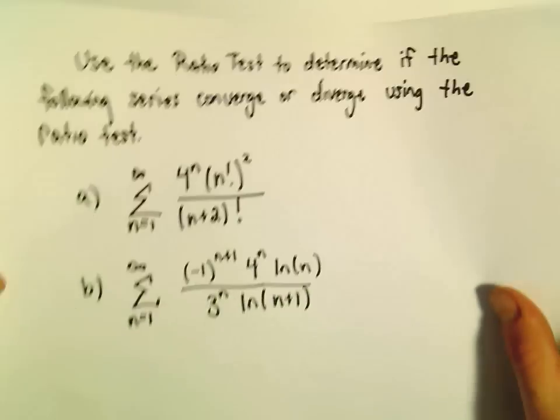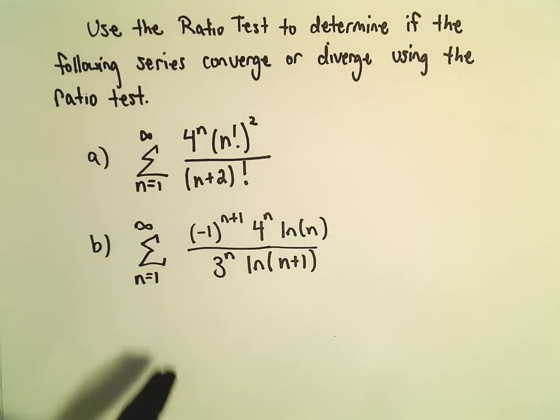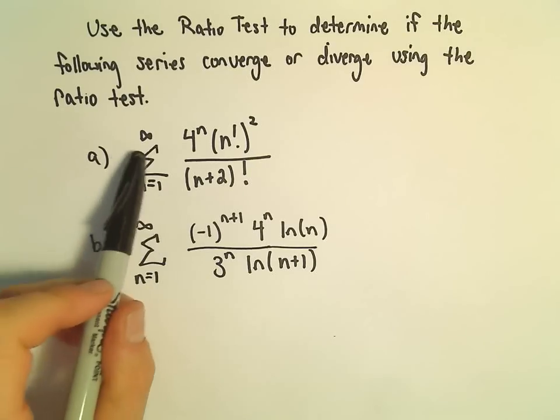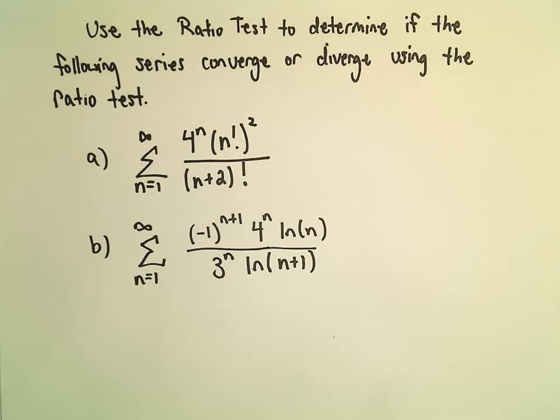Alright, so here we're going to look at some examples of the ratio test. Part A, we're just going to figure out whether the series converges or diverges: n equals 1 to infinity, 4 to the n, times n factorial squared over n plus 2 factorial.